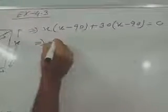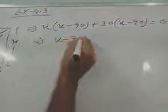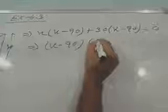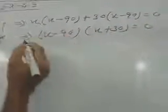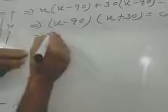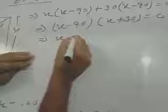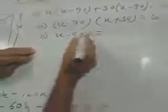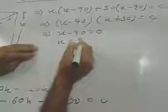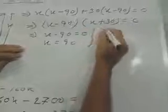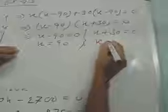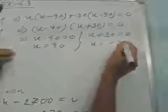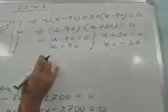If x minus 90 is equal to 0, then x is equal to 90. And, if x plus 30 is equal to 0, then x is equal to minus 30, then negative measurement is not possible.